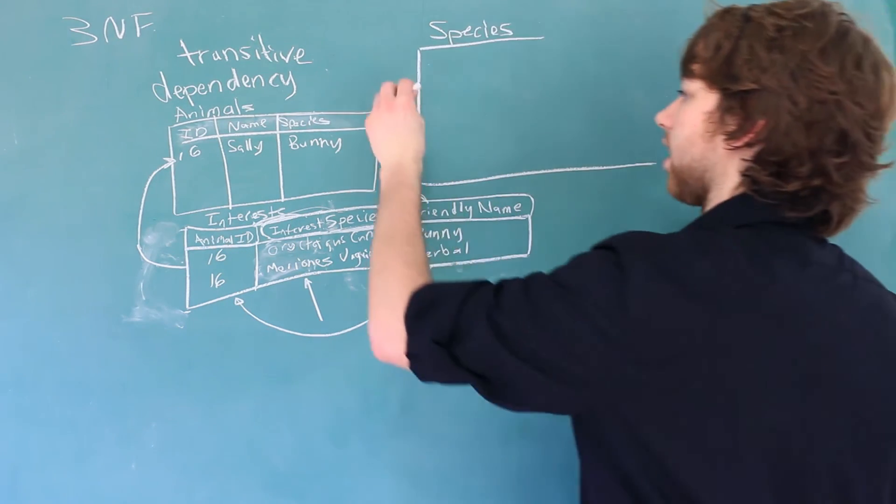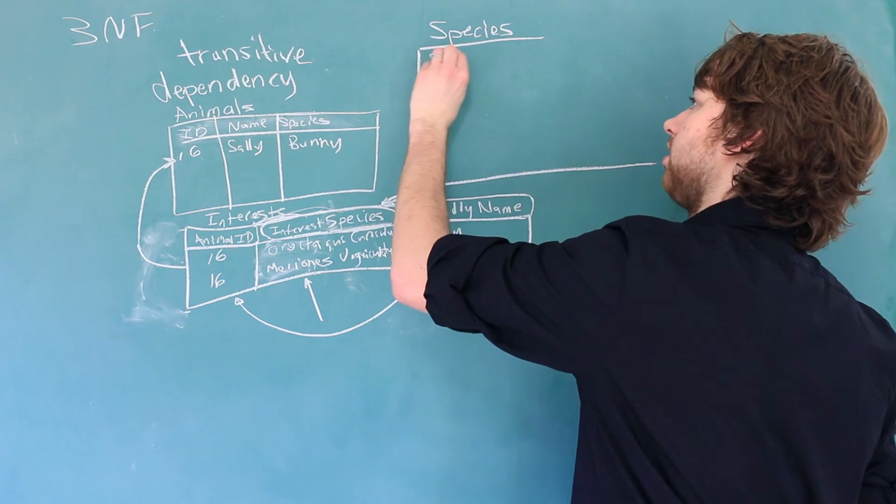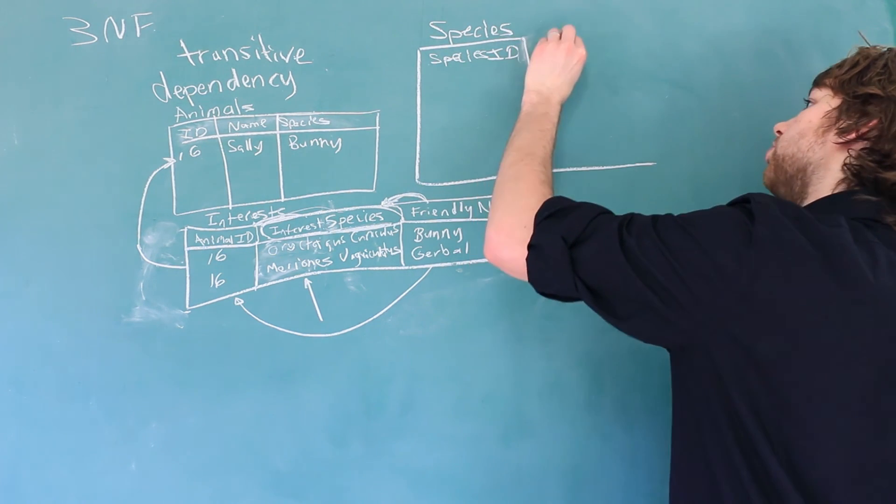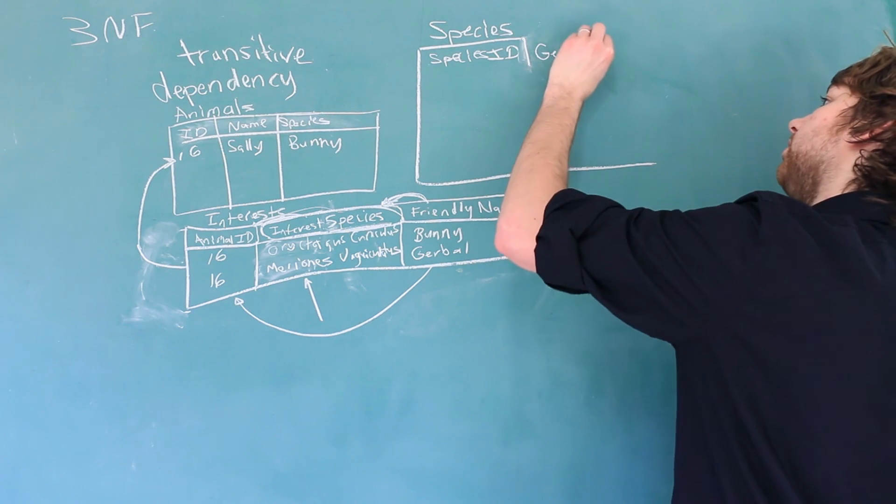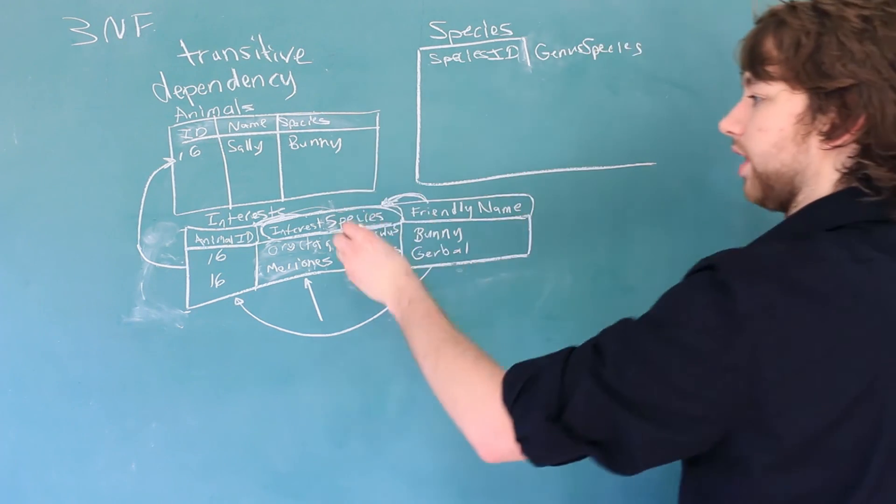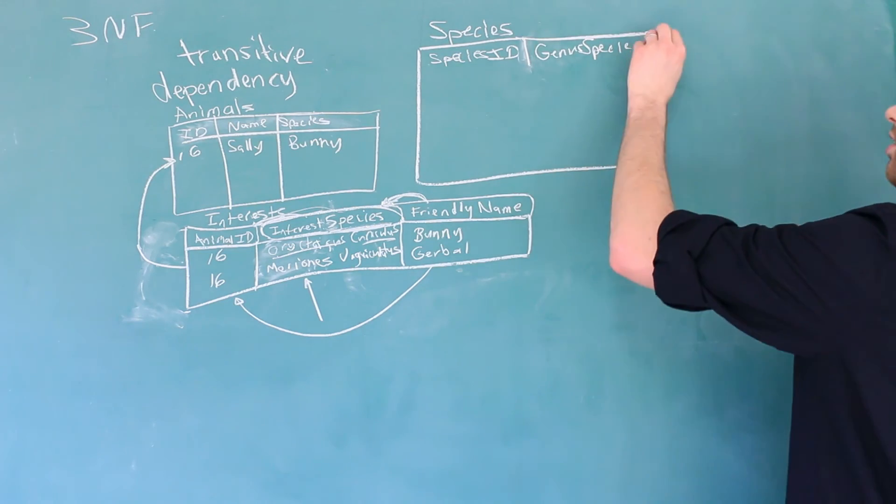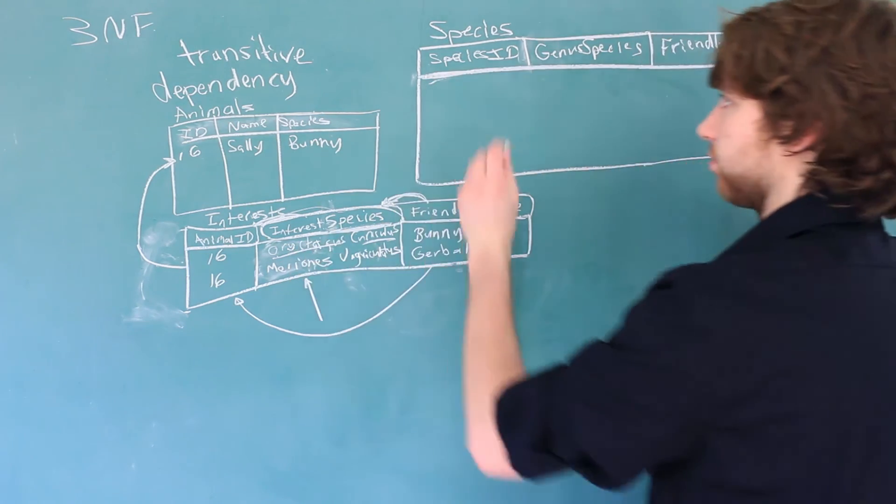So we need to do that over here. So we'll say species. And inside of here, we'll have a species ID. And we'll store just the genus and the species. So we'll say genus species, which that's what that is. This is the genus and it's the species. And then we'll say friendly name.